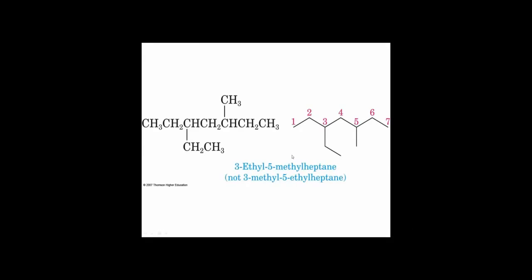Let's name this next compound by counting the longest chain — one, two, three, four, five, six, seven — so it's a heptane. Looking at it horizontally, I see two substituents: a methyl and an ethyl. They're both equally distant from either end of the chain.